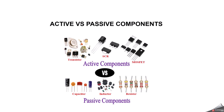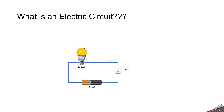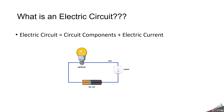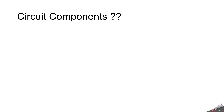First of all, we need to know what is an electric circuit. An electric circuit is, in simple terms, defined to be the combination of circuit components and electric current. Before jumping into the differences between active and passive components, we need to know what is a circuit component. A circuit component is a basic building block of the circuit.